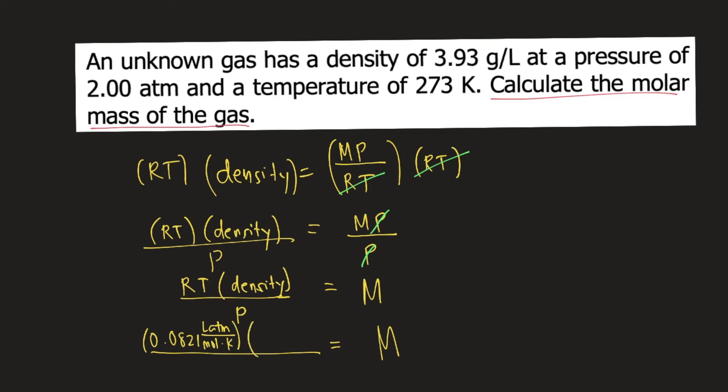So T is the temperature in kelvin. So make sure the temperature is in kelvin. In the problem, the given is 273 kelvin. So luckily we don't need to convert it anymore because it's already in kelvin. So T is 273 kelvin.